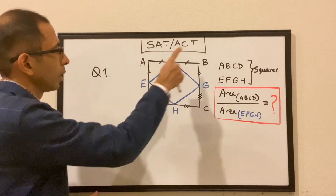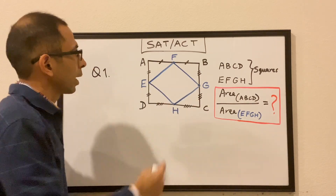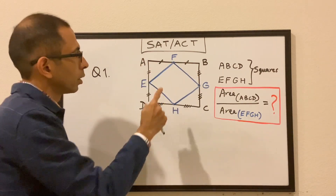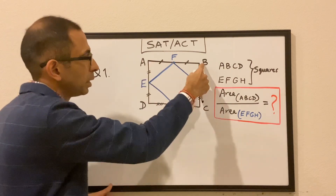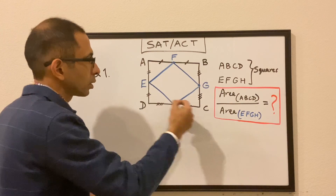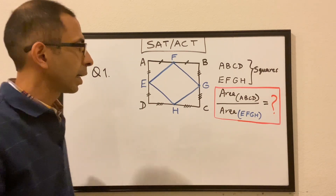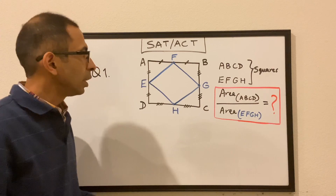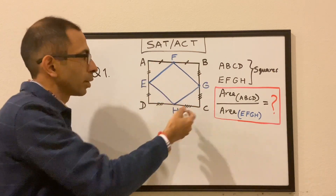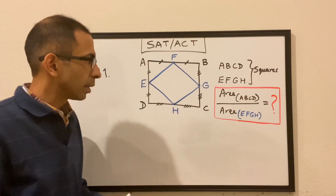We have a square ABCD and inside it we have another square EFGH such that E, F, G, and H are the midpoints of the outer square. So AF is equal to FB, BG is equal to GC, and so on. We have to find the ratio of the area of the outside square to the area of the inside square. The key insight is that we don't need any specific values for these squares as long as we are finding ratios.